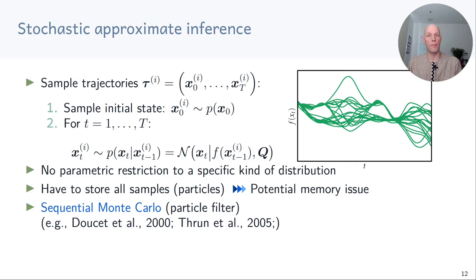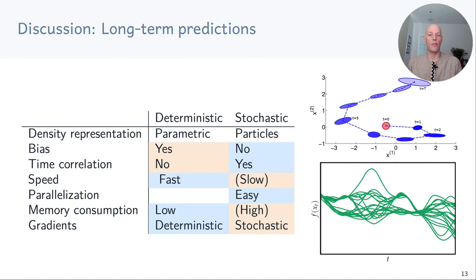Let's compare the two approaches. In deterministic approximate inference we represent distributions using parametric forms such as Gaussians, whereas in the stochastic case we represent them using particles. The deterministic approach introduces bias, does not properly model correlation between time steps, but it's fast, does not require too much memory, and gradients of the expected loss with respect to parameters are deterministic. In the stochastic case we have no bias and account for time correlation through ancestral sampling. While sampling can be slow, it is easy to parallelize, but because of the inherent randomness we only get stochastic gradients rather than closed-form gradients.